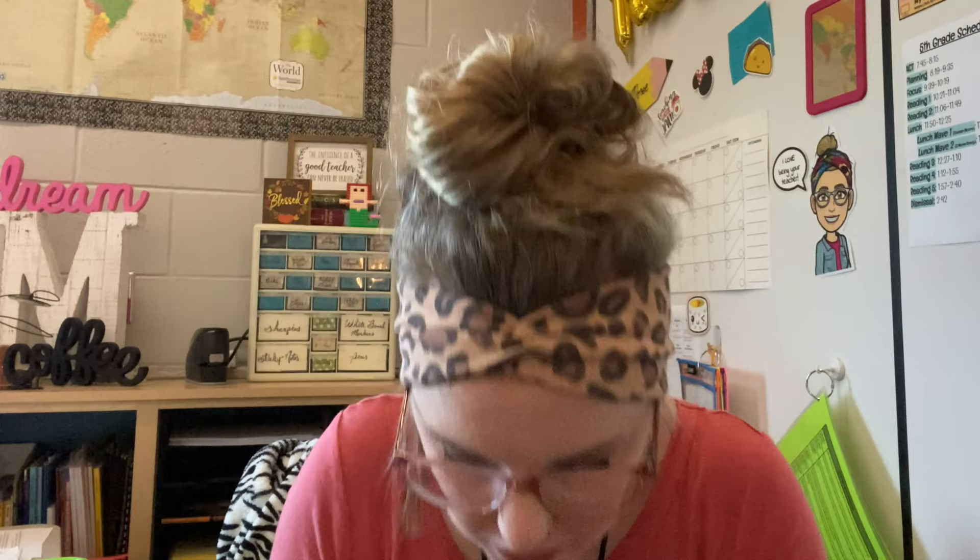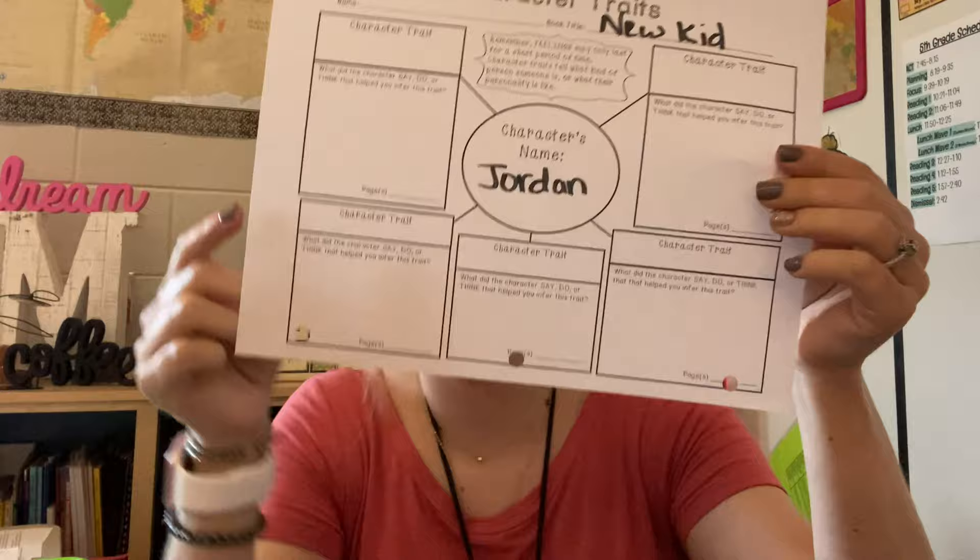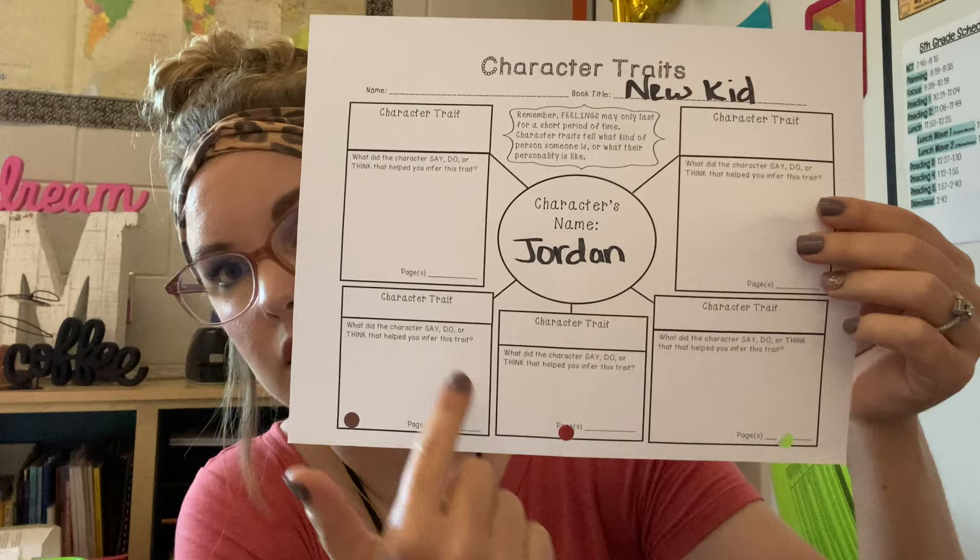If you've never read New Kid, I highly recommend it. It talks about really good topics of race, equality, and representation. They're going to read the first two chapters and then analyze the character traits of Jordan. I found this on TPT for free — they'll come up with different character traits and give some justification from text evidence.